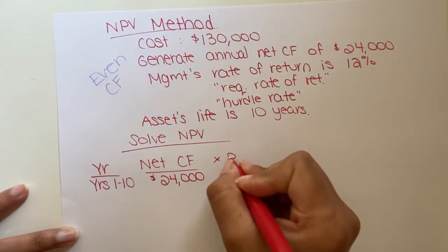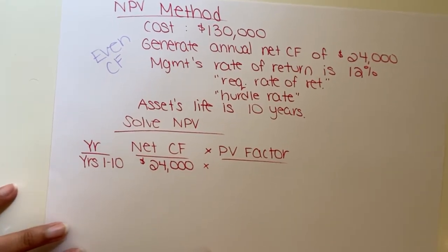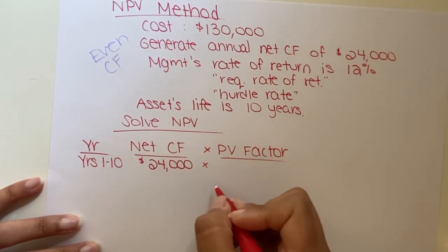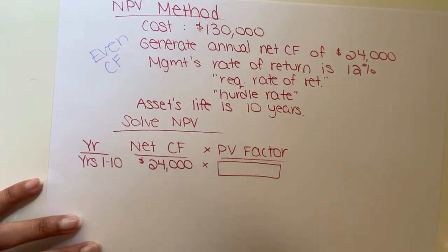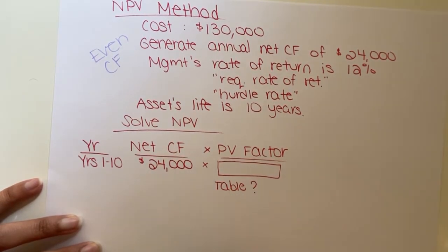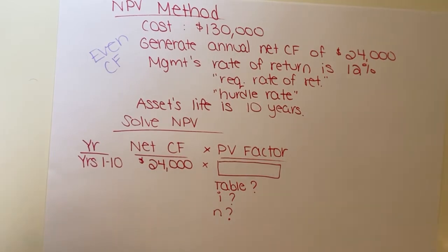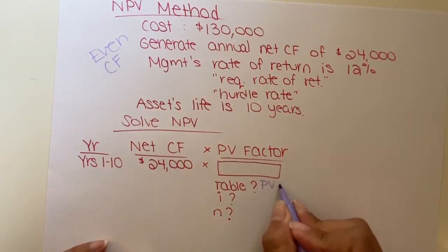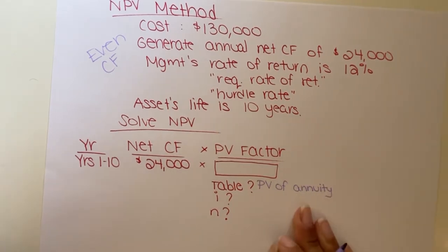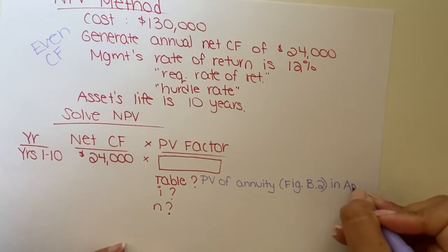We're going to multiply that by a present value factor. Remember your present value factors from when we were doing bonds? We're searching for a present value factor. There are a few things you need to determine: one, identify the table we're going to use; two, the interest rate I; three, the number of periods N. If it's even cash flows, we use the present value of an annuity table — I believe that's Figure B2 in Appendix D of your book.